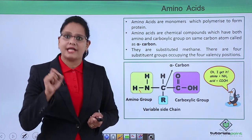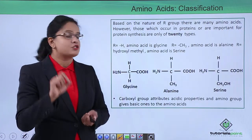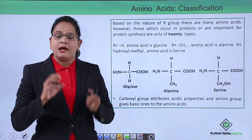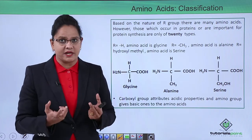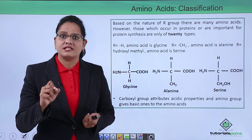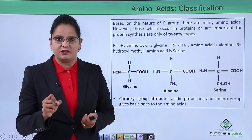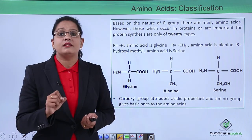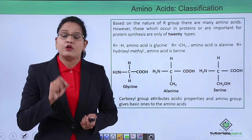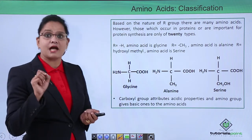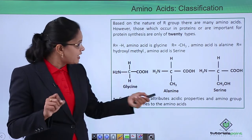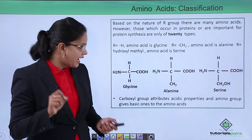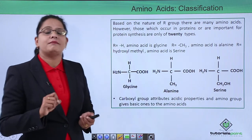This variable side chain R group is very important because it determines the nature and type of the protein. On the basis of the nature of the R group, there are many types, but biologically only 20 amino acids form important proteins. If the R group is replaced by H (hydrogen), the amino acid is called glycine. If replaced by CH₃ (methyl group), it is alanine. If replaced by a hydroxymethyl group, it is serine.